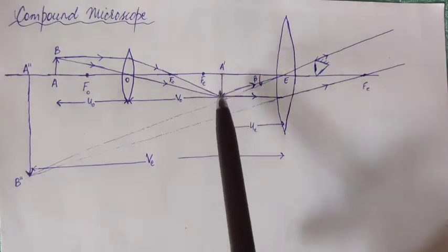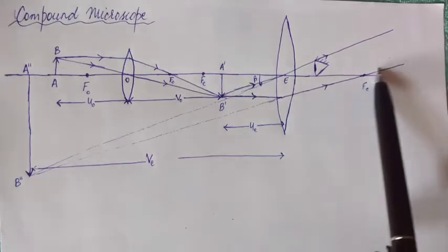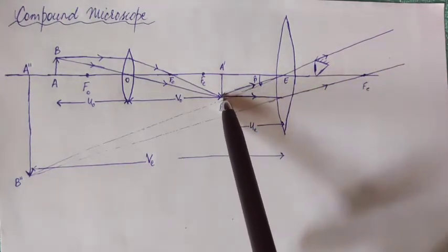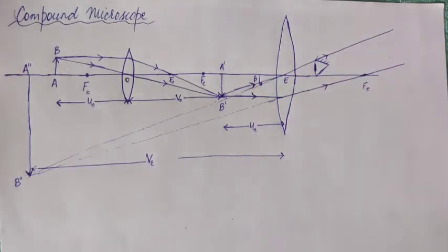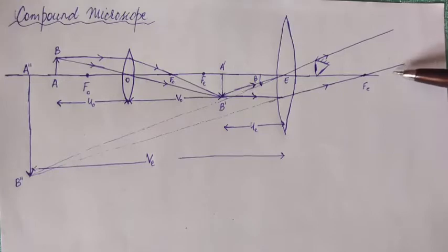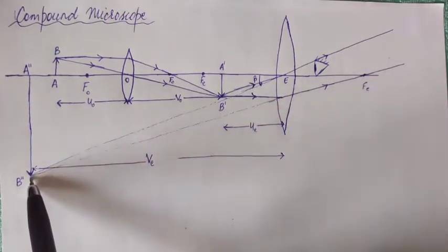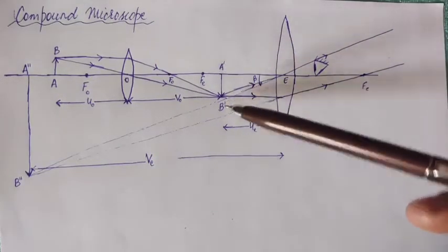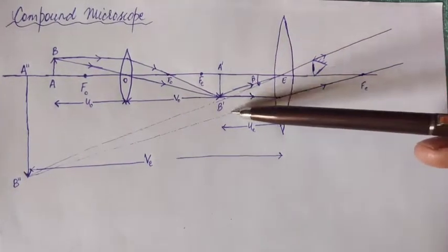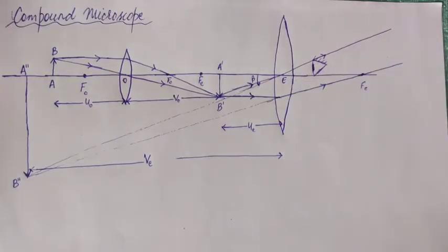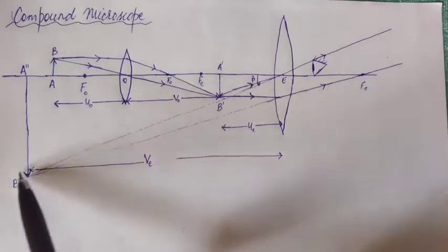A'B' is the inverted image formed by the objective. One of the rays from A'B' goes parallel to the principal axis and passes through the focal point of the eyepiece. These two rays are diverging. When these two diverging rays are produced backwards, as denoted by the dashed lines, they meet at a point where a virtual image A''B'' of A'B' is formed. A''B'' is the virtual image that the eye eventually sees.